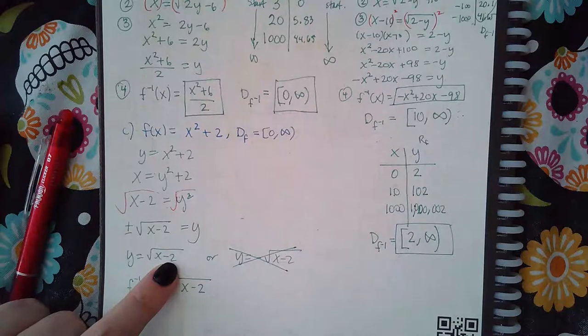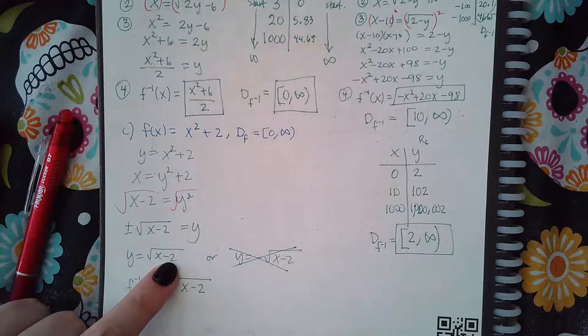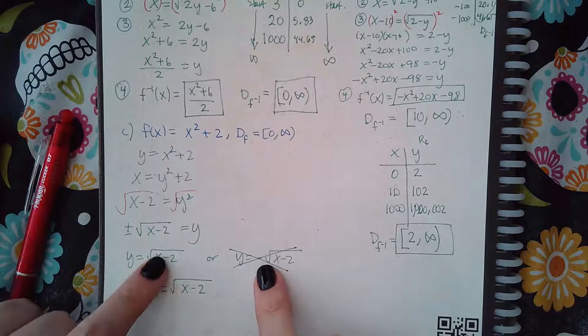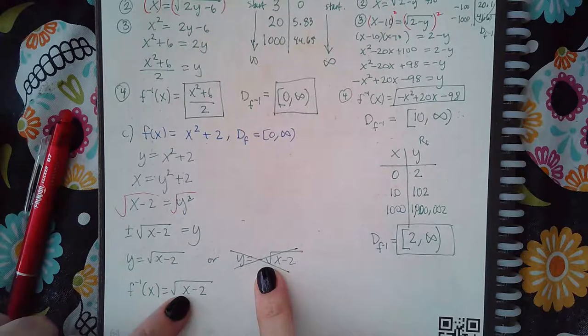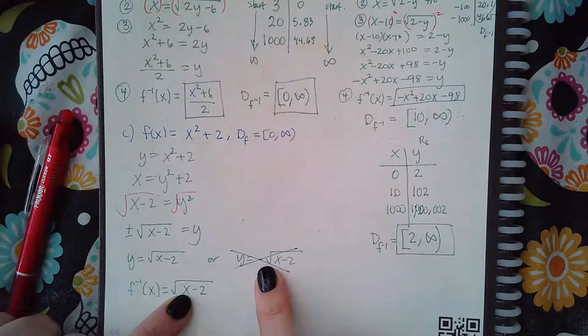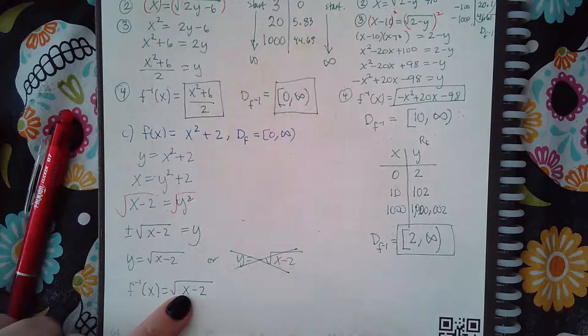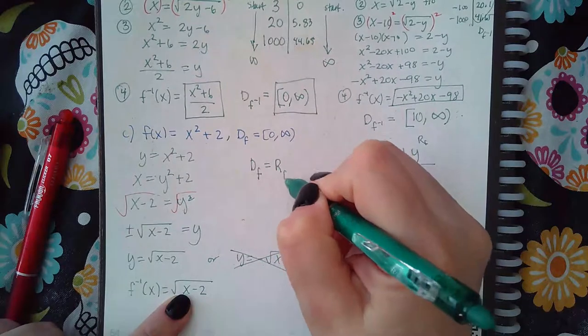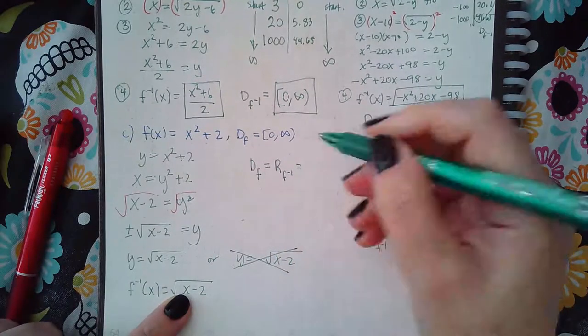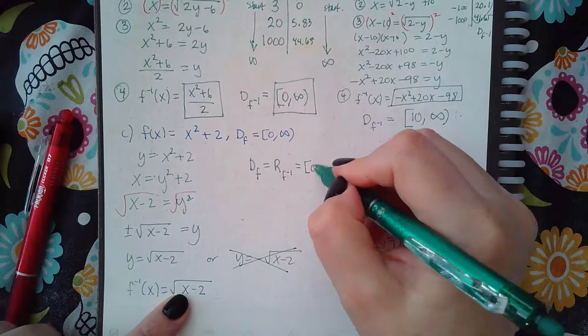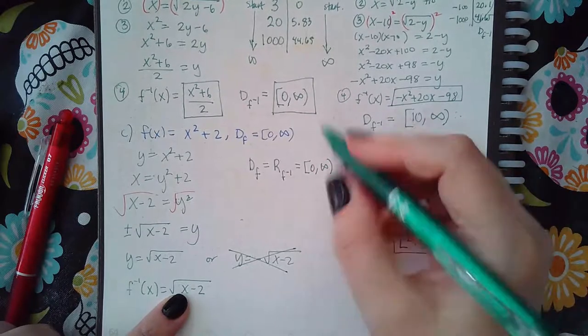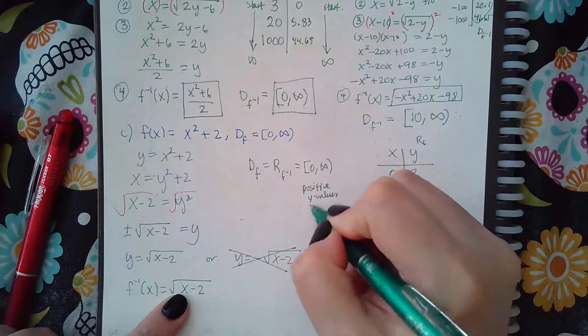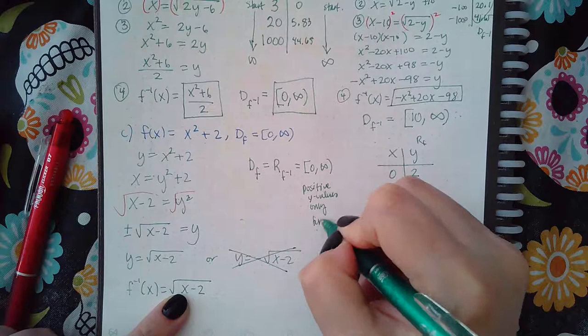Now let me see. So I ruled out this one because of the positive. You want it to have positive values. So this was the one that I used as the final answer. And why did I use that? Because this is one. We know that the domain of f is supposed to equal the range of f inverse. So then if the domain of f is this, that means it's going from 0 to infinity. That means positive y values only for f inverse.